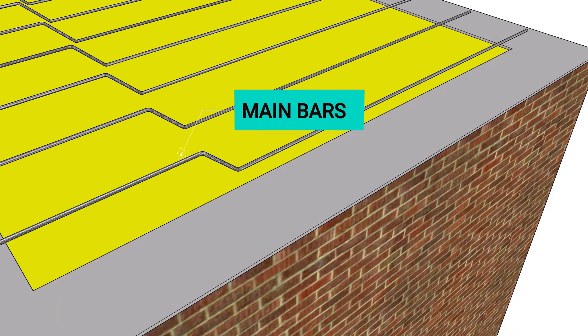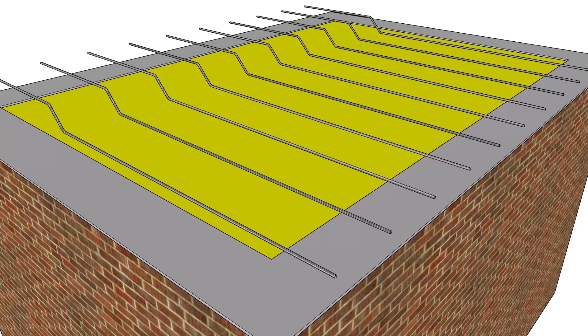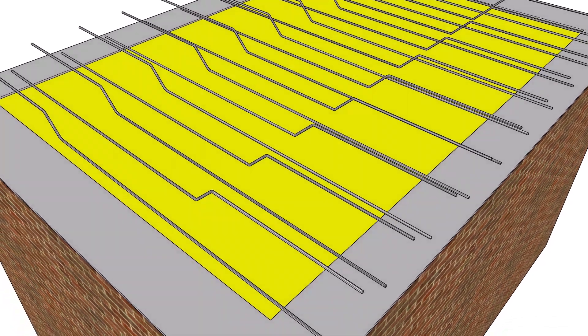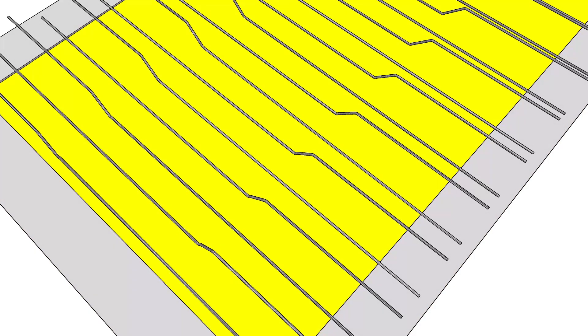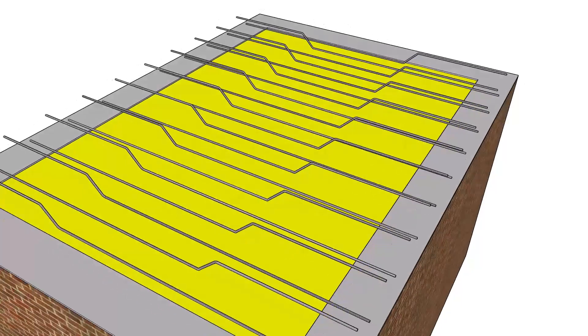First of all, we have main bars. Main bars are placed at the bottom of the slab to resist the tensile forces that result from bending. They are aligned parallel to the shorter span as this span primarily carries the load. These main bars are anchored at the ends of the slab to add stability.